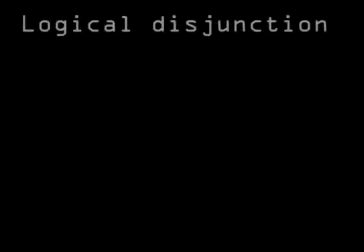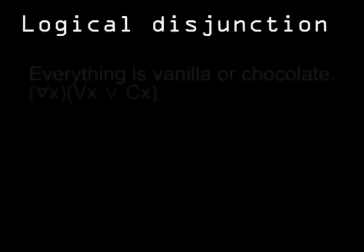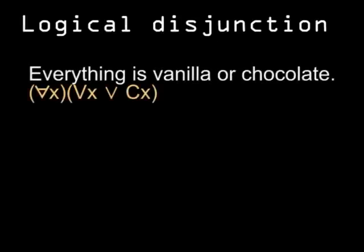Speaking of OR, we can join sentences with OR as well. This disjunction might come between two statements like P OR Q — for example, 'this is vanilla OR this is chocolate.' But we can also use it with variables, x OR y. So 'everything is vanilla OR chocolate' means that all x's are vanilla, chocolate, or both.